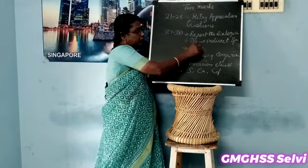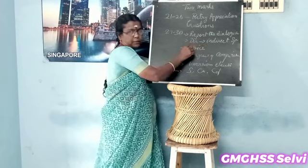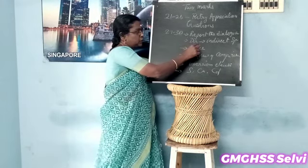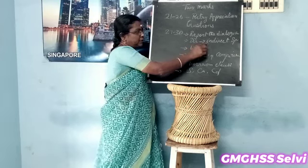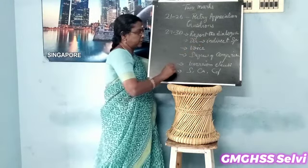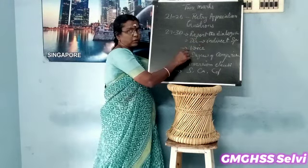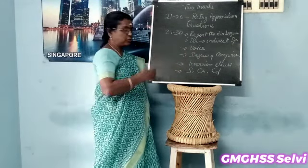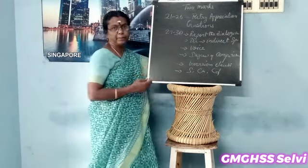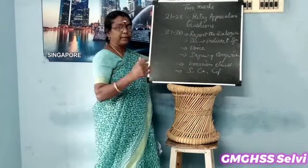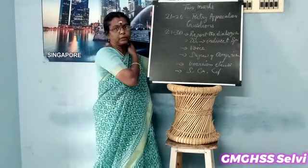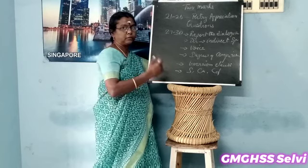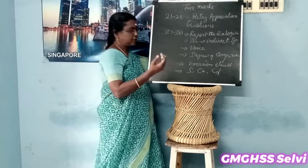Then direct to indirect speech, or indirect to direct speech — you are given direct speech and are supposed to rewrite it into indirect speech, or indirect to direct. Then voice — active voice to passive voice, or passive to active. And degrees of comparison — positive degree, comparative degree, superlative degree: positive to comparative, comparative to superlative, positive to superlative, etc.